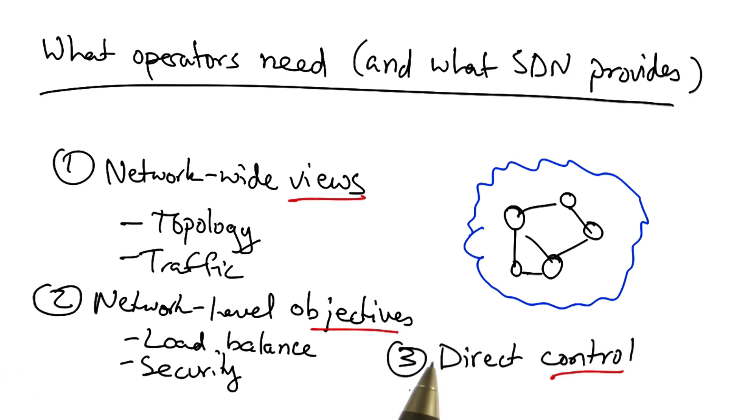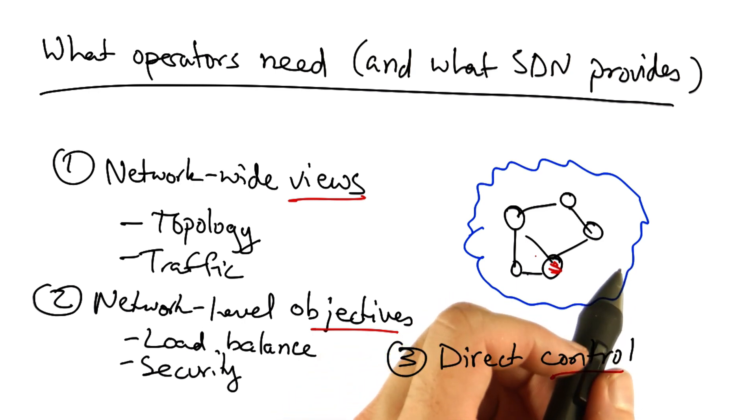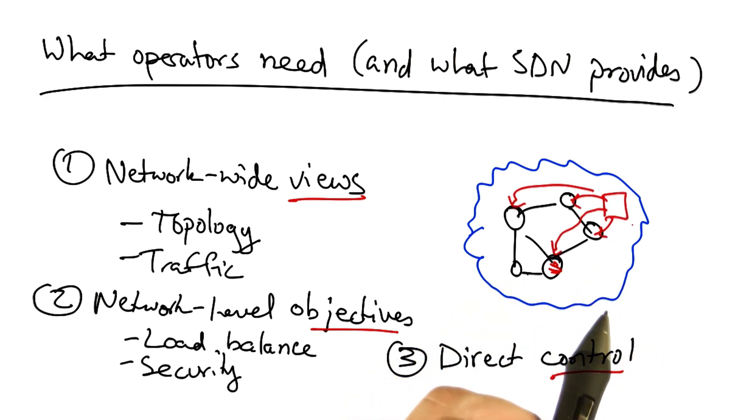The third thing that software defined networking provides that network operators need is direct control. In particular, rather than requiring network operators to configure each device individually with indirect configuration, SDN allows an operator to write a control program that directly affects the data plane.